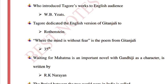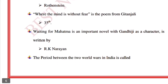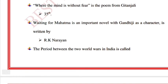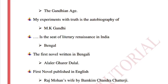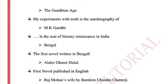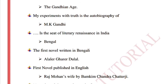'Waiting for Mahatma' is an important novel with Gandhi as a character, written by R.K. Narayan. The period between the two World Wars in India is called the Gandhian Age. 'My Experiments with Truth' is the autobiography of M.K. Gandhi.